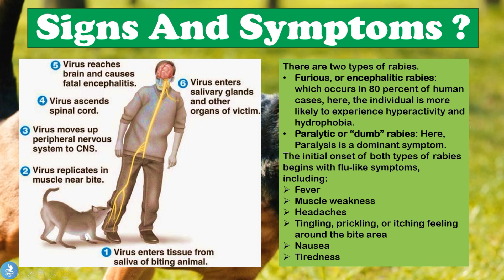Once a wild animal bites a human, the virus enters the tissue from the saliva of the biting animal. The virus then begins to replicate in the muscle near the bite site, moves up from the peripheral nervous system to the central nervous system, and ascends up the spinal cord. The virus then reaches the brain where it causes a fatal encephalitis — inflammation of the brain tissue — and then enters the salivary glands and other organs of the victim.